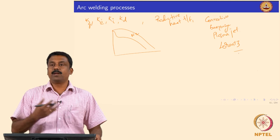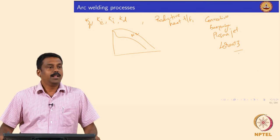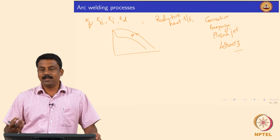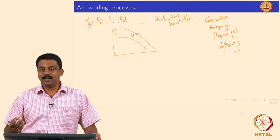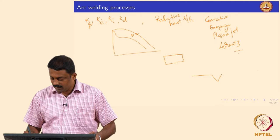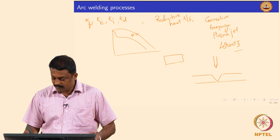We looked at the typical schematic of a welding setup. The most important characteristic is the arc itself, which actually generates the heat — that is the work force for us. So if we are talking about the arc, how do we ignite it?